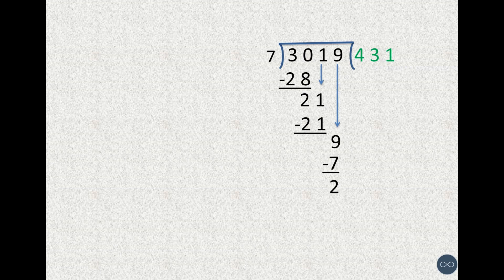Using division algorithm, we can write 3019 as 7 times 431 plus 2.